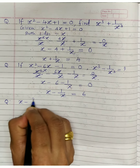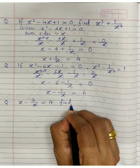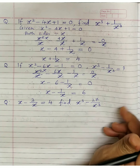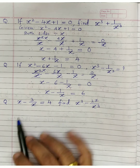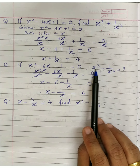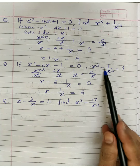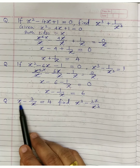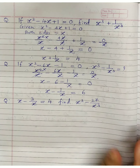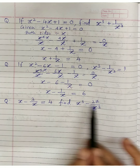Another pattern: x minus 3 upon x equals 4, find x cube minus 27 upon x cube. If you understood the pattern, you'll see: cube of x is x cube, and cube of 3 upon x is 27 upon x cube. So apply a minus b whole cube formula on the given expression to get this term.